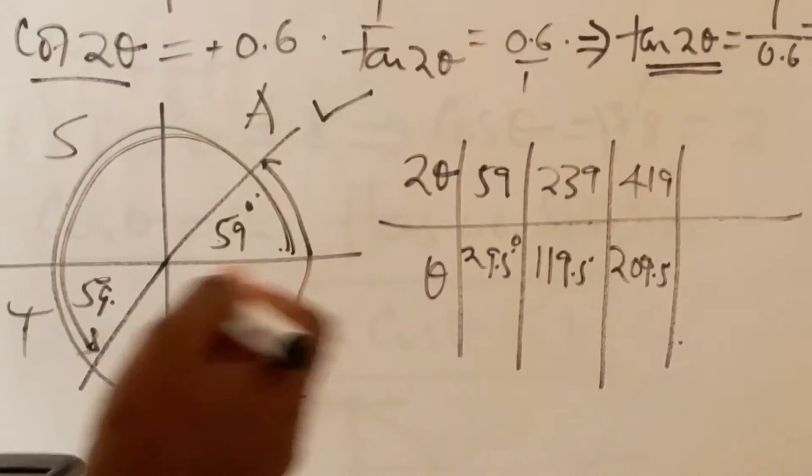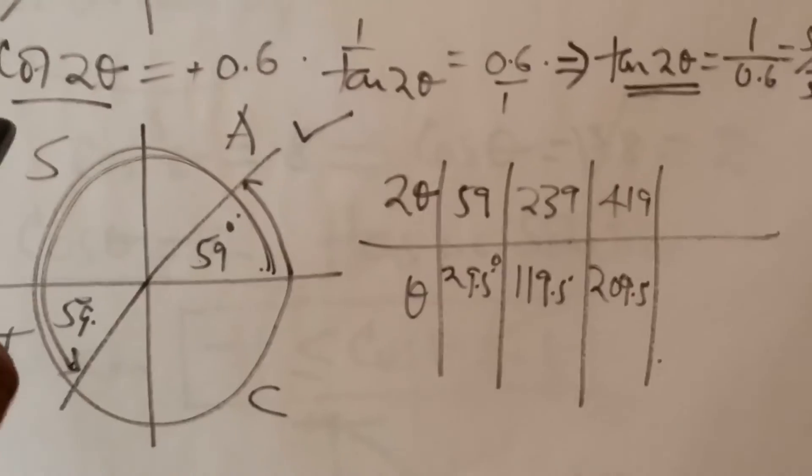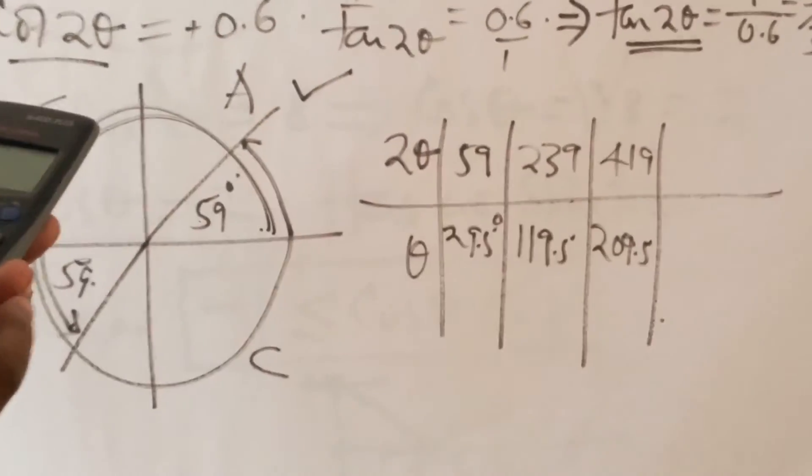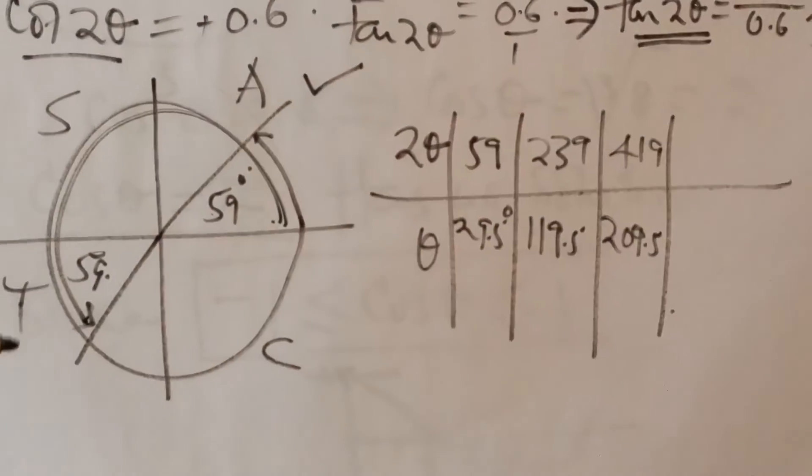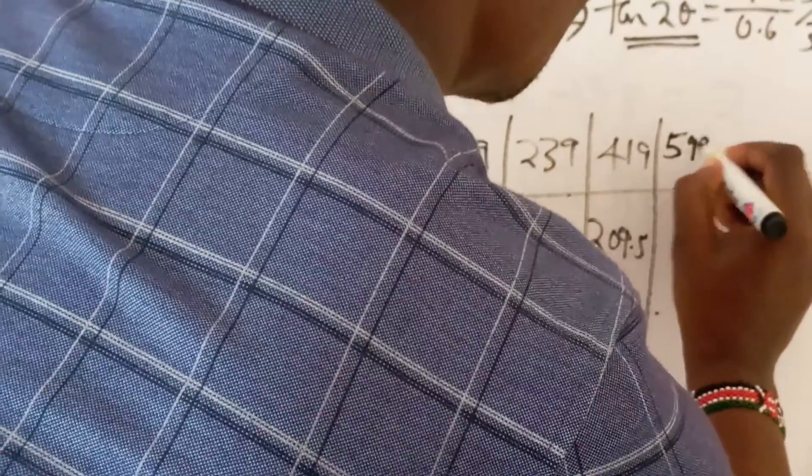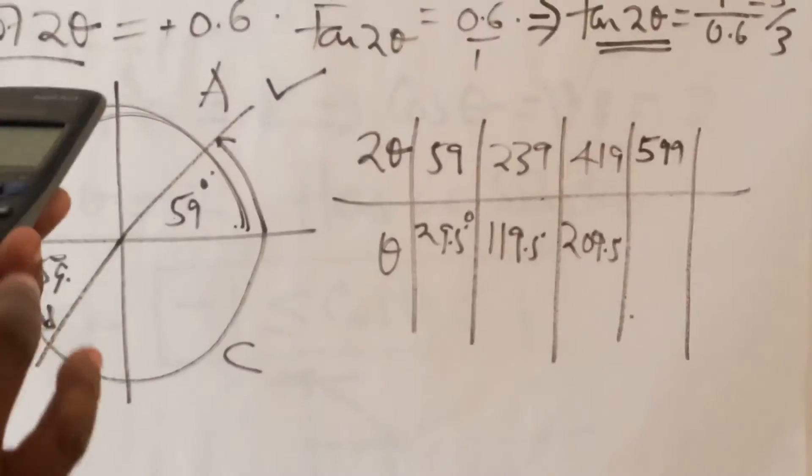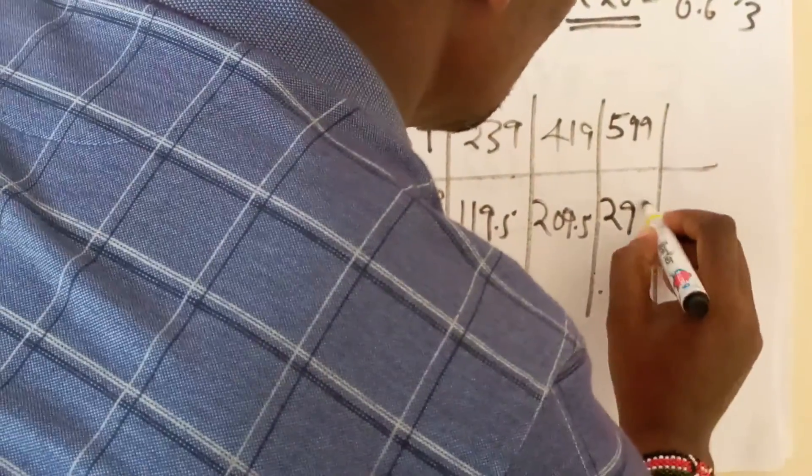It is also important to note that we can still move on, because we are still very far. That means 360 plus 239, which gives us 599. 2 theta can be 599. Half of that, divide by 2, gives us 299.5.